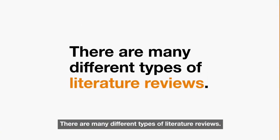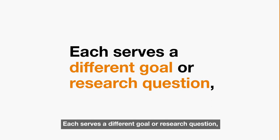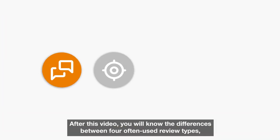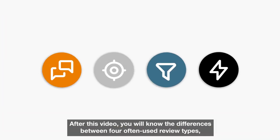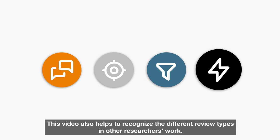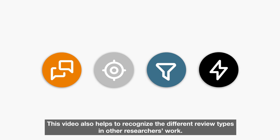There are many different types of literature reviews. Each serves a different goal or research question, uses specific methods, or may require more of your resources. After this video you will know the differences between four often used review types and you will be able to pick the best match for your publication. This video also helps to recognize the different review types in other researchers' work.